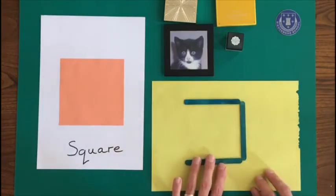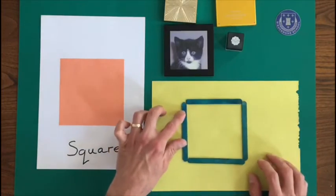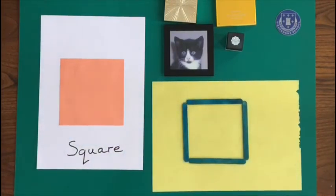And one, two, three, four. And there we go. You can make a square with those. So feel free to have a go at looking for square objects or objects that you can make square shapes from.